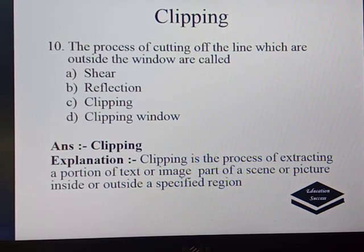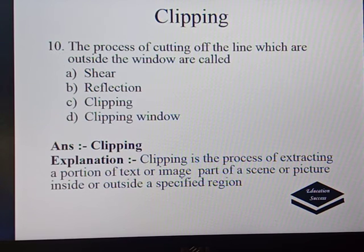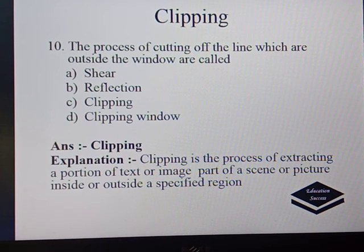The next question: the process of cutting lines which are outside the window is called shear, reflection, clipping, or clipping window. Again it is a simple question — clipping is the process of cutting off the part of a picture which is outside the window. Clipping is the process of extracting a portion of text, image, scene, or picture which is inside or outside a specified region. So the correct answer is clipping.